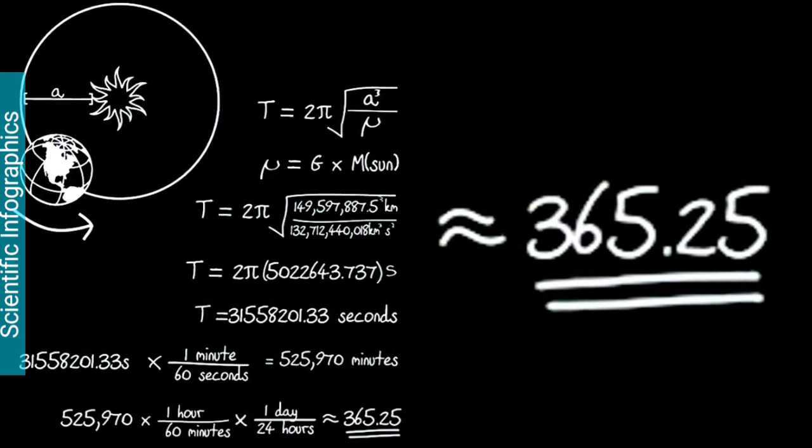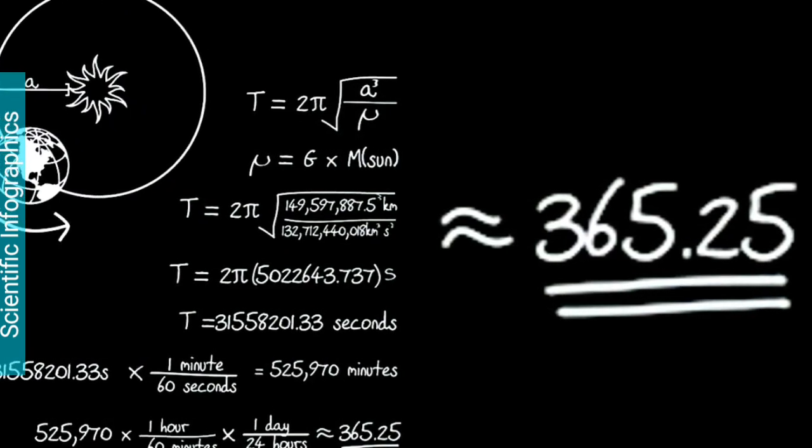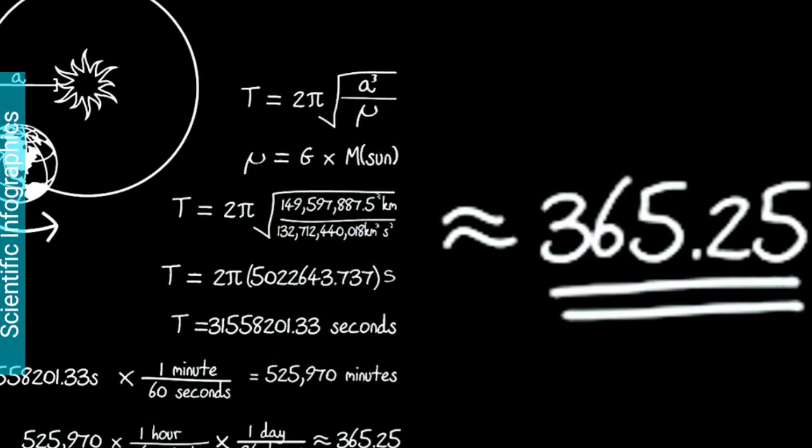This 0.25 of a day is added every fourth year, and this is the reason behind 29 days in February every fourth year. We call it a leap year.